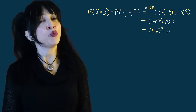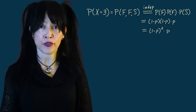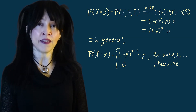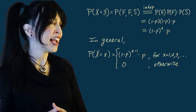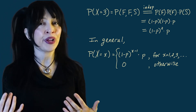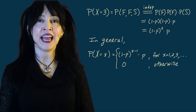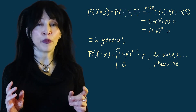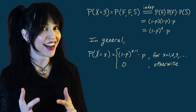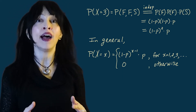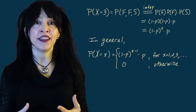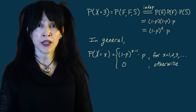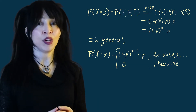If you can't see the pattern yet, write out the probability that X equals four and you'll catch on. In general, the probability that the first success is on the xth trial — where lowercase x can take values one, two, three, and up — requires x minus one failures followed by a success. So we get one minus p multiplied x minus one times, representing x minus one failures, and then finally a p. The probability mass function is one minus p to the x minus one times p, for x equals one, two, three, and up — zero otherwise.